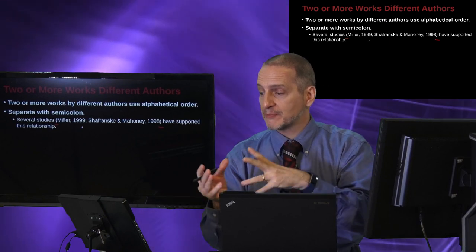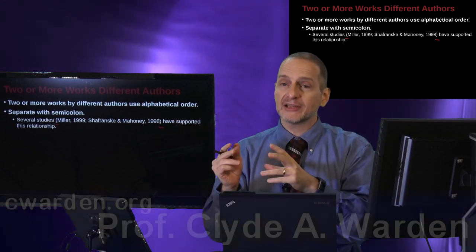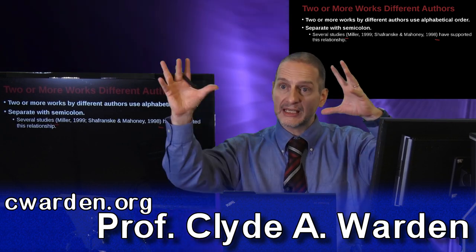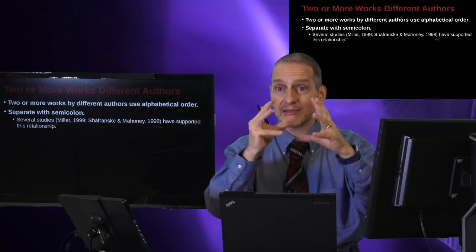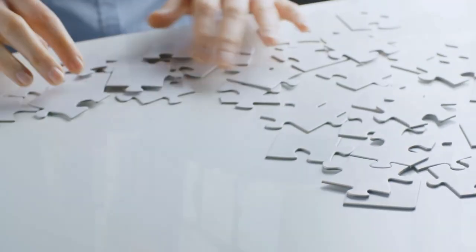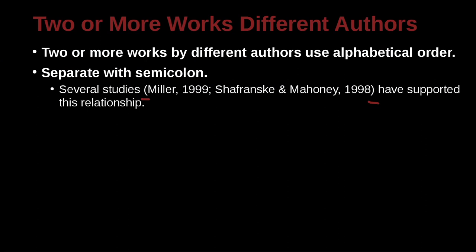Here's a simple example — we just have two, but in reality most of your writing you're going to have five or six, because you're doing your literature review. You're taking many ideas and putting the main things together like a puzzle. So in this case, how do we put those together? We have one paper from Miller and one paper from Schofransky and Mahoney.